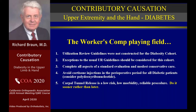Exceptions to the usual UR guidelines should be considered for this cohort, but they're not there — and that's unfortunate. The diabetic or obese patient may not be getting a fair shake because of that. Third, complete all aspects of a standard evaluation and modest conservative care — but don't overdo it. Conservative care carried out too long is simply ignoring the problem. You can't do that with these people — they'll get worse, and they won't get better.